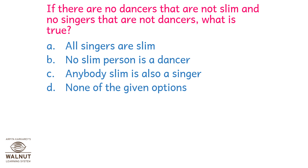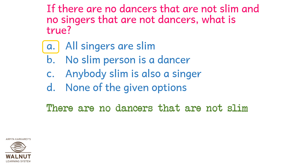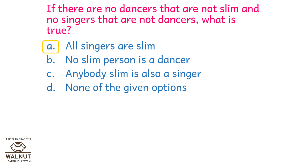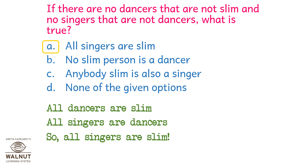Next: if there are no dancers that are not slim, and no singers that are not dancers, what is true? Let's evaluate the options. Option A: All singers are slim. There are no dancers that are not slim — so all dancers are slim. There are no singers that are not dancers — so all singers are dancers. Since all dancers are slim and all singers are dancers, we can say all singers are slim. So the first option is correct.